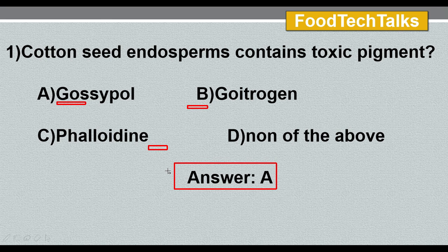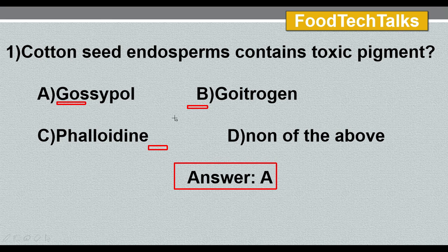I'll give a brief idea about the other two options. Goitrogen is commonly found in plants belonging to the Brassica family — examples like broccoli, cabbage — and it acts as an inhibitor for the thyroid hormone or interrupts its production. Option C, phaloidine, is commonly found in a kind of mushroom like the death cap mushroom, and once in the body it binds with actin and prevents the depolymerization of actin.